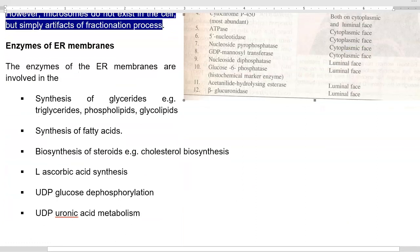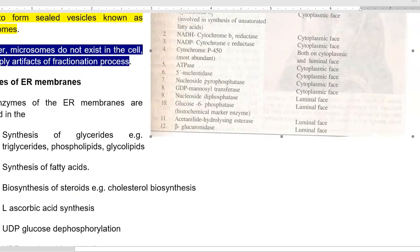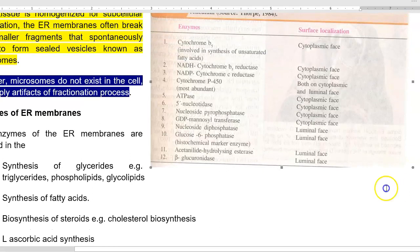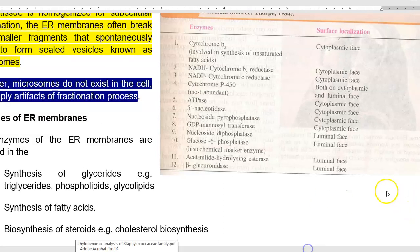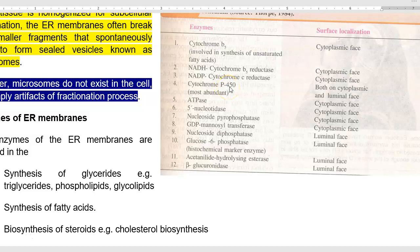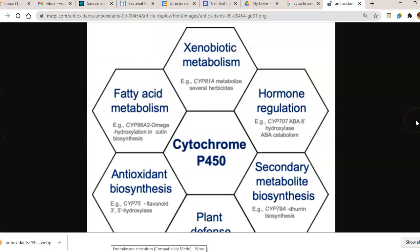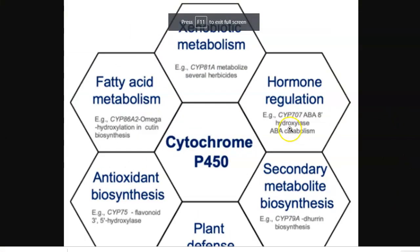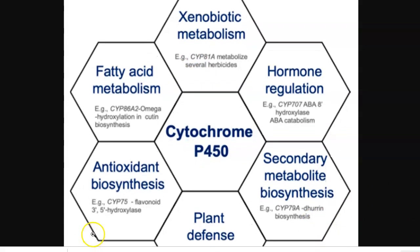Looking at the right-hand side image, you can see the various enzymes present in the endoplasmic reticulum and their locations. For example, cytochrome P450 is an abundant enzyme present in the living system, found in both the cytoplasmic and luminal phases. In plants, this enzyme plays a major role in hormonal regulation, fatty acid metabolism, xenobiotic metabolism, secondary metabolite synthesis, plant defense, and antioxidant biosynthesis.